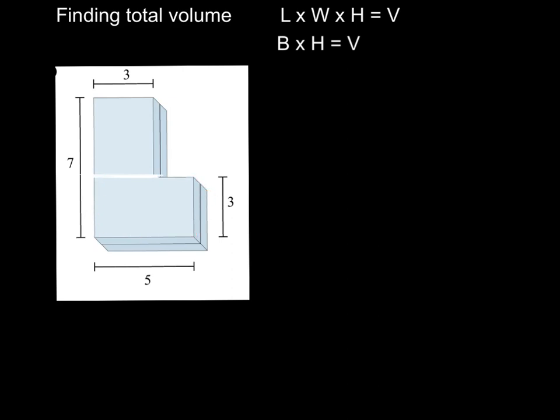So now we are going to solve for volume for these two and then just add them up. So if we look at the bottom one, we see that we have a length of 5 and a width of 3 and a height of 2. So I'm just going to multiply 5 times 3 times 2. 5 times 3 is 15, 15 times 2 is 30. So that's going to equal 30.